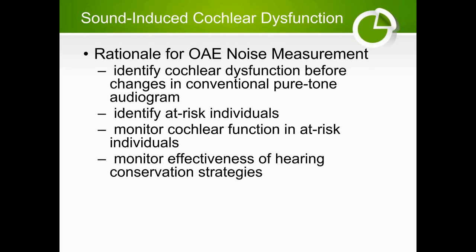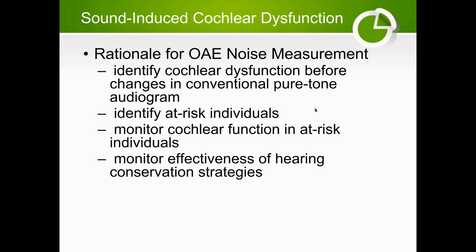Our purposes for using OAEs as it relates to noise include identifying cochlear dysfunction before it appears on the conventional pure tone audiogram, and identifying those at risk — individuals where OAEs may be reduced or absent but the pure tone audiogram is still within normal range. They may be at greater risk of audiogram changes than a population with normal audiograms and robust OAEs. OAEs can also monitor cochlear function in at-risk individuals over time and monitor the effectiveness of hearing conservation programs.